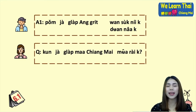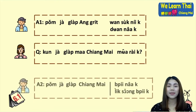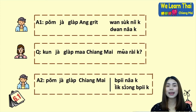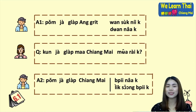คุณจะกลับมาเชียงใหม่เมื่อไหร่คะ — 'When will you come back to Chiang Mai?' When your friend has gone back to their country and you want to ask when they'll return, you can use กลับมา (glap ma) meaning 'return back.' For the answer: ผมจะกลับเชียงใหม่ปีหน้าครับ — 'I will come back to Chiang Mai next year,' or ผมจะกลับเชียงใหม่อีกสองปีครับ — 'I will come back to Chiang Mai in two years.' อีก (ik) means 'in,' as in 'in two years.'